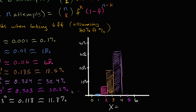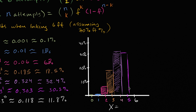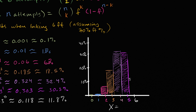And then five was 30.3 percent, so 30.3 percent, just slightly lower, like that. And finally six is 11.8 percent.